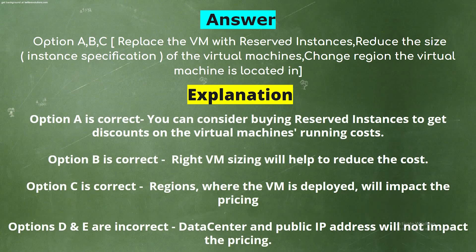The correct answers are Options A, B, and C. Option A is correct: you can consider buying reserved instances to get discounts on the virtual machine's running cost. Option B is correct: right-sizing will help to reduce the cost. Option C is correct: the region where the VM is deployed will impact the pricing. Options D and E are incorrect: data center and public IP address will not impact the pricing.